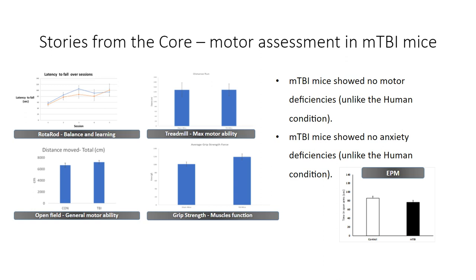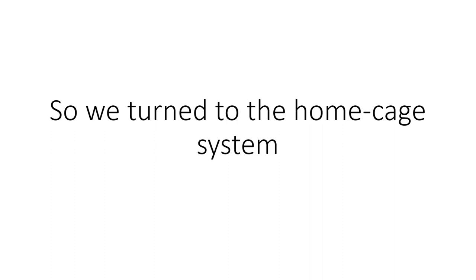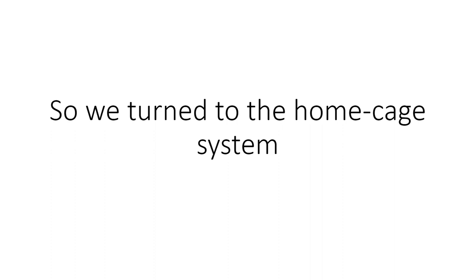We also wanted to assess anxiety using elevated plus maze and the open field by looking at center visits. Interestingly, we didn't see anything there, although in humans with mild TBI we do see elevated anxiety. After publishing the paper — which included several motor tests — we concluded we needed to dig a little deeper, so we put our mice inside the home cage using phenotypers.